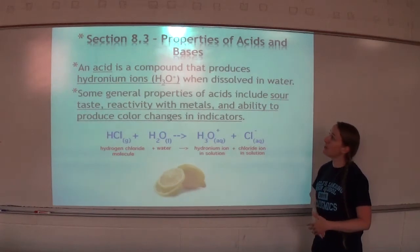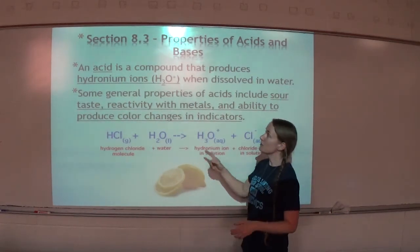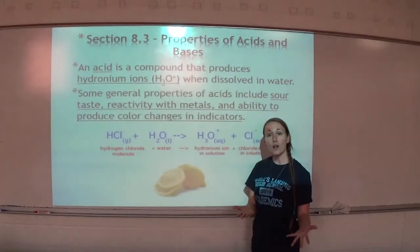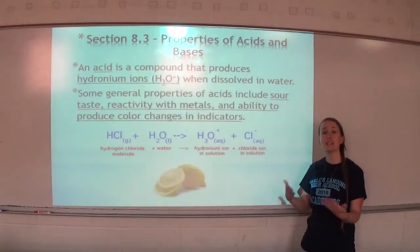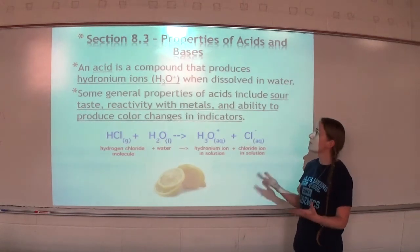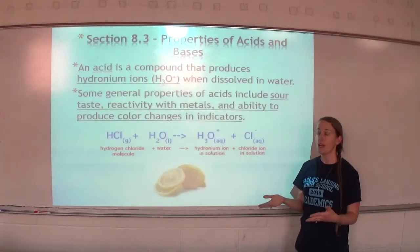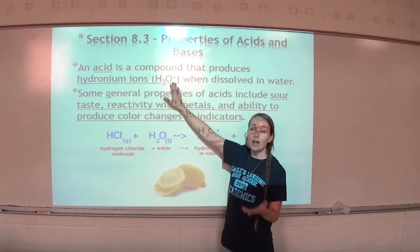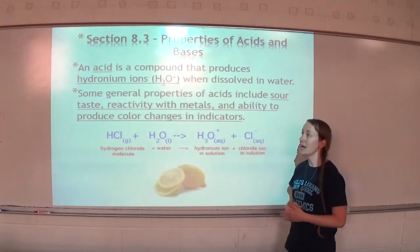An acid is a compound that produces hydronium ions, which is H3O+. It's when a water molecule H2O gains another hydrogen, so it becomes H3O+ when it dissolves in water. If something is dissolved in water and it forms H3O+ or hydronium ions, that substance is an acid.